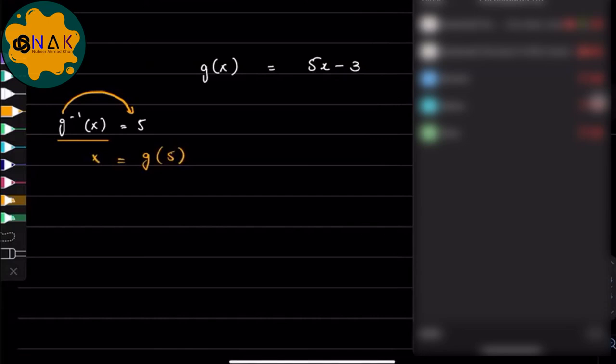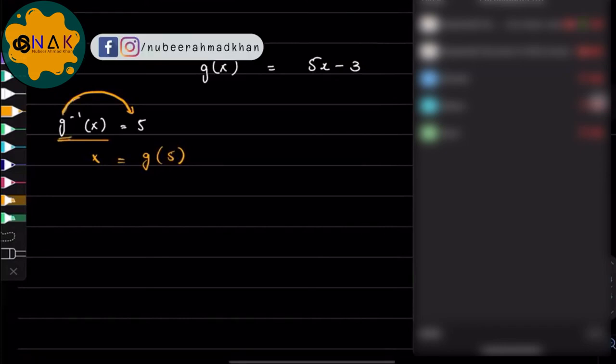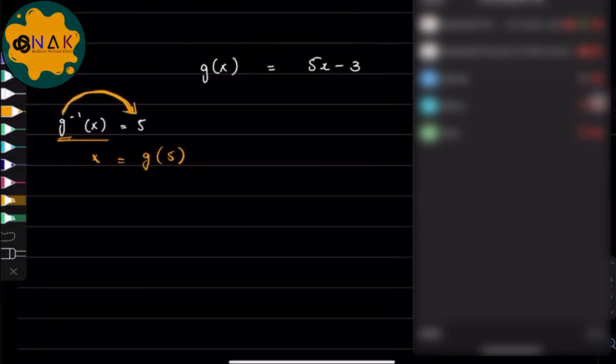Let me explain it again. What happens when you bring this g inverse on this side, on the other side of the equal, I mean the inverse gets removed and you can write it down as g(5). Now what you can do, you can simply solve g(5). What would you get? Five bracket five minus two or minus three, 25 minus three, and you would still get 22.